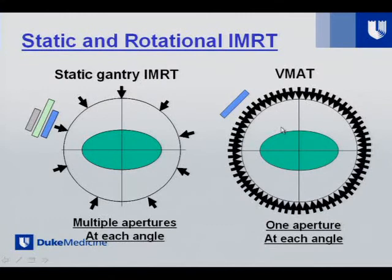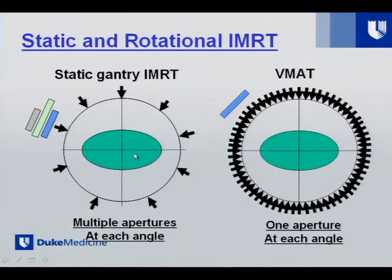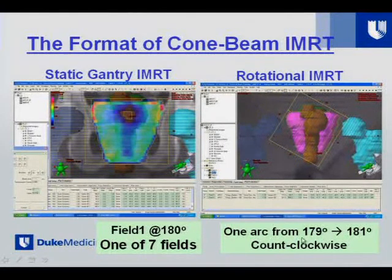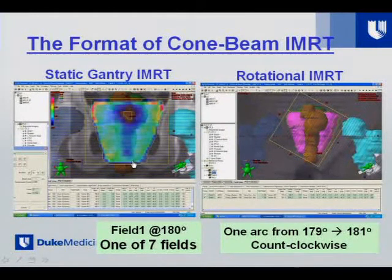Jim raised the question of whether VMAT is faster. With Varian technology, we have the mode-up, field delivery, gantry change, and mode-up again — which takes time. If you don't have to mode up again, time may be reduced. The fields typically used for prostate with arc therapy rotate from 179 to 180 degrees to avoid a software bug at exactly 180, whereas IMRT typically uses 7 to 9 equally distributed angles.